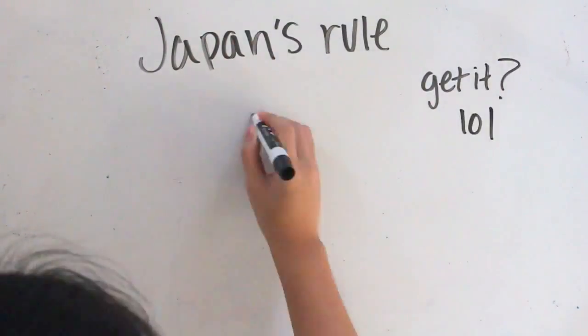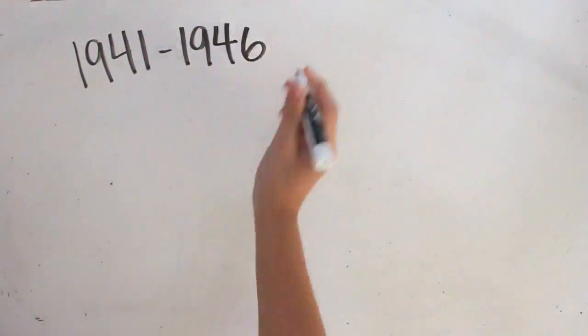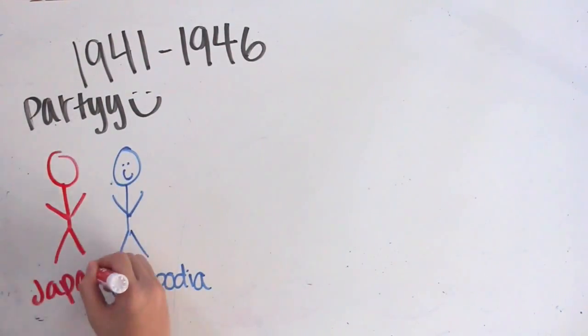Under Japan's rule, Cambodia was able to gain a brief period of independence. However, in 1946, the French came back and re-established its control and the Japanese gave way.